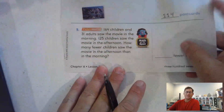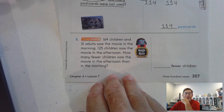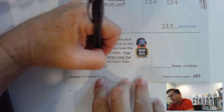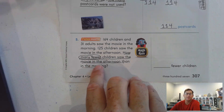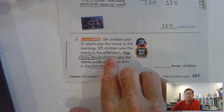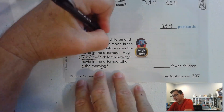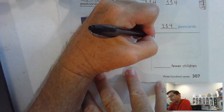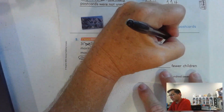Number five: 164 children and 31 adults saw the movie in the morning. 125 children saw the movie in the afternoon. How many fewer children saw the movie in the afternoon than in the morning? 'How many fewer' is a clue for subtraction. We don't need the 31 adults — we need 164 children and 125. So we have 164 minus 125.